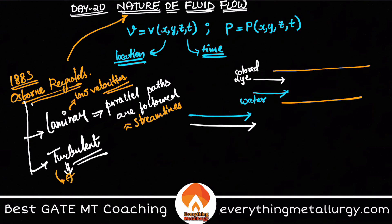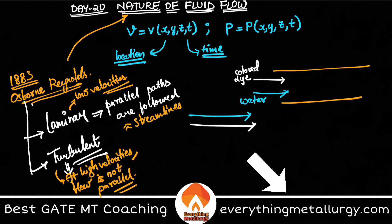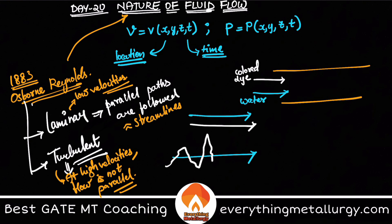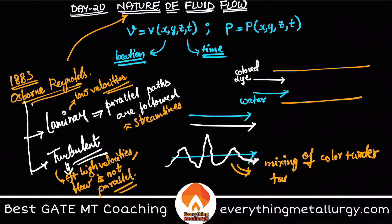Turbulent flow is usually taking place at high velocities, and the flow is not parallel anymore. The water may be flowing in one particular manner, but the colored dye flows in some random manner. Even if the water is going in a parallel path, the colored dye has changed its path relative to the water, so you observe mixing of the colored dye and water — mixing of fluids is observed in turbulent flow.